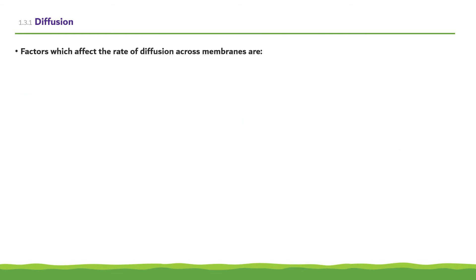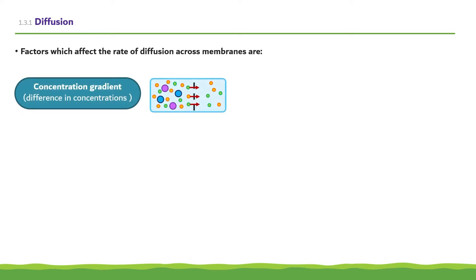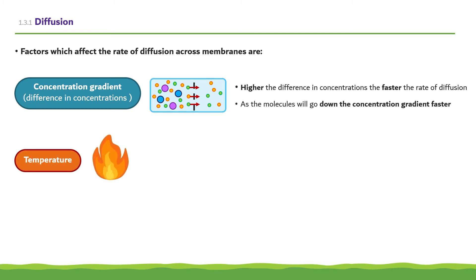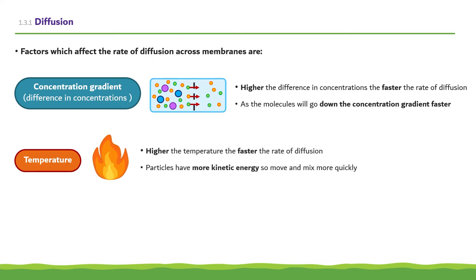There are three main factors which affect the rate of diffusion across membranes. The concentration gradient is the difference in concentrations between the solutions on either side of the membrane. The higher the difference in the concentrations, the faster the rate of diffusion, as the molecules will go down the concentration gradient faster. The next factor is temperature — the higher the temperature, the faster the rate of diffusion, as the particles have more kinetic energy, so move and mix more quickly.